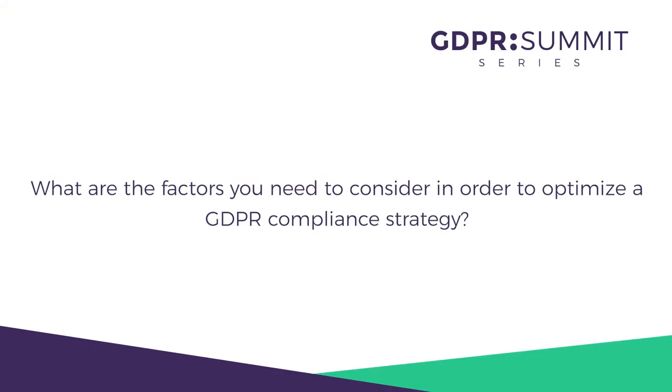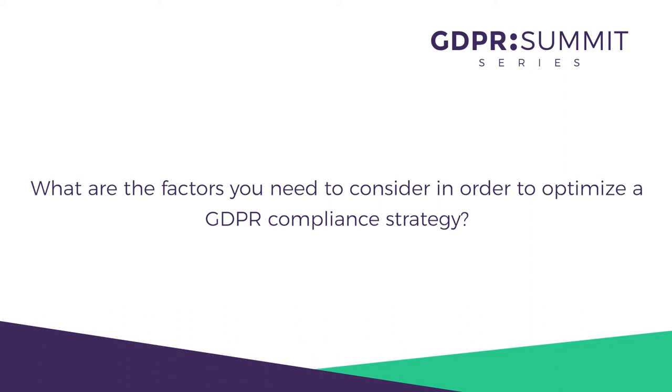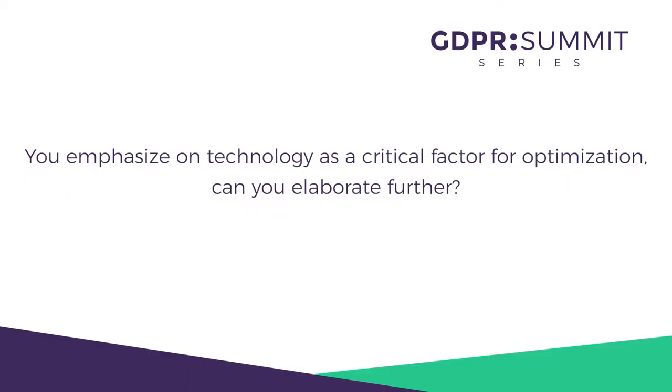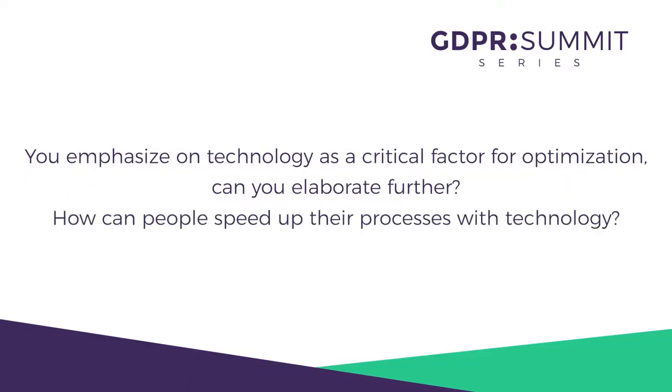GDPR is a very broad regulation, so we can break it down to mainly three aspects: people, process, and technology. An organization should target to optimize their cost, overall technology complexity, and most importantly time. An organization should find out what is the right technology to optimize their GDPR strategy.